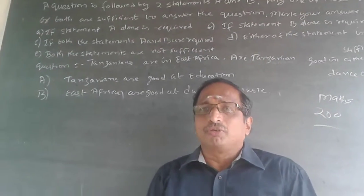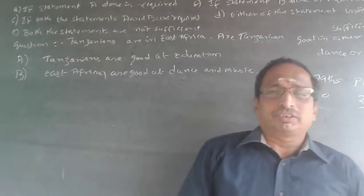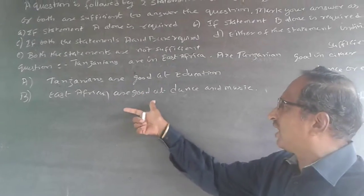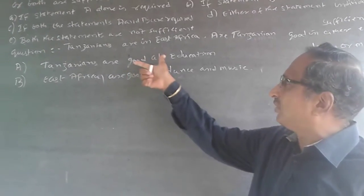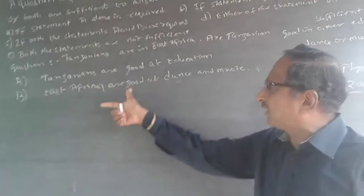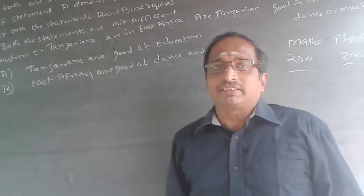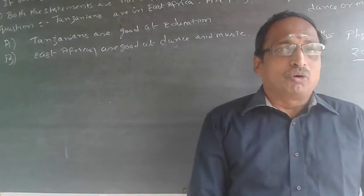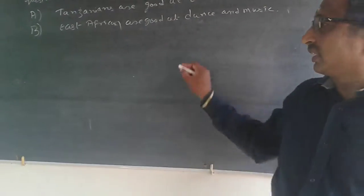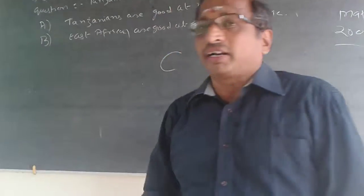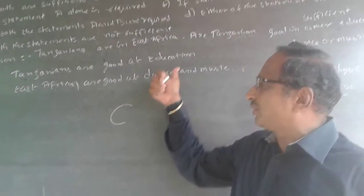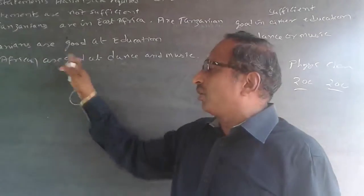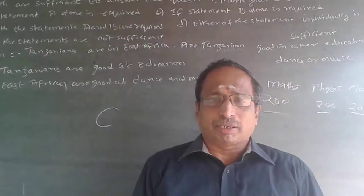Similarly, Tanzanians are good at education, and East Africans are good at dance and music, so you will have to give the answer that Tanzanians are good at education, dance, and music. Both conditions are required — the answer is C. Both conditions are required to confirm that Tanzanians are good at all three: education, dance, and music.